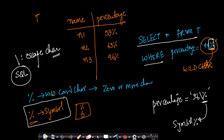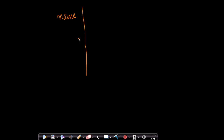We have two wildcard characters: percentage and underscore. Underscore becomes very important in cases like email addresses where underscore is used as a symbol. Whenever you want percentage or underscore to be treated as symbols and not as wildcard characters, you should use the escape character, which is a backslash. Every programming language has escape characters — this is the escape character in SQL.